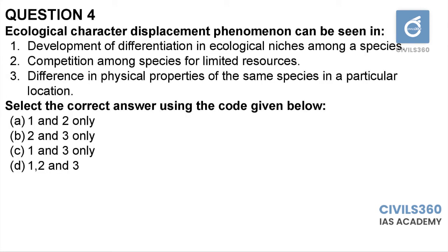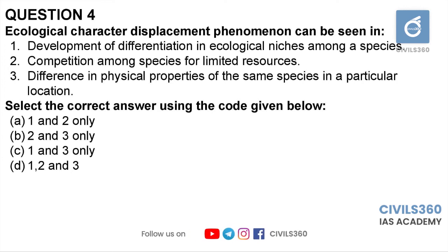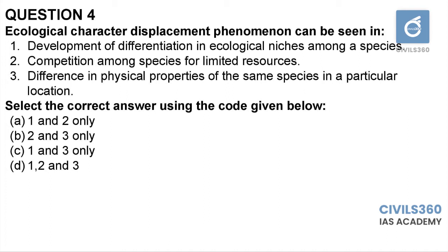Question number four: ecological character displacement phenomenon can be seen in — one: development of differentiation of ecological niche among a species, two: competition among species for limited resources, three: difference in physical properties of the same species in a particular location. Character displacement is a phenomenon where two individuals of the same species have different physical characteristics.